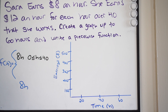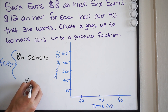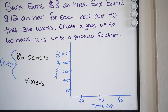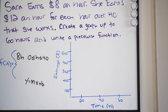Now let's talk about the second function. It says she earns $12 an hour for each hour over 40. We need to create a function showing that. This is also going to be linear, so we need to find the slope. Think about slope-intercept form: y equals mx plus b. We can use the formula to find the slope between two points.